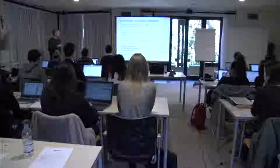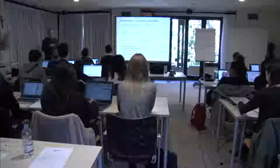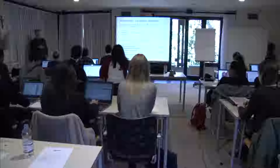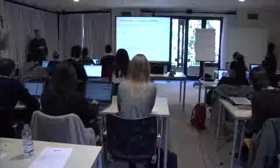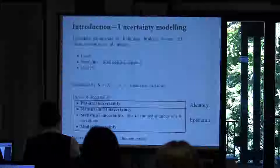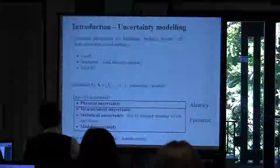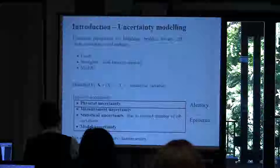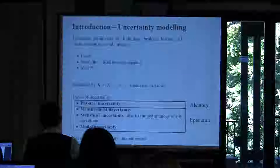It is important to note that model uncertainties are related to a given model. You cannot take a model uncertainty for one model and apply it to all models — for example, for the buckling strength of a steel column. It depends on which model it is connected to.